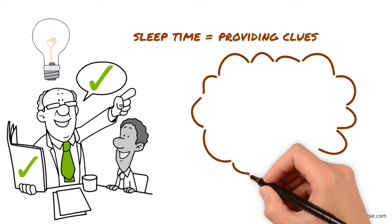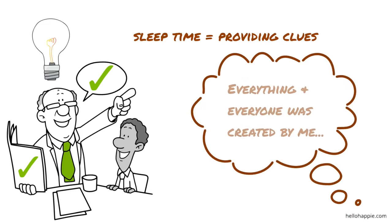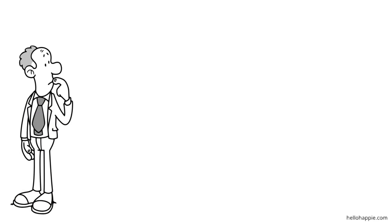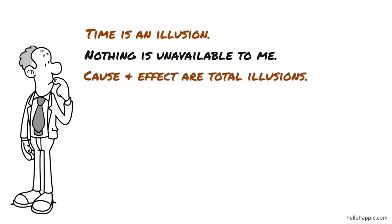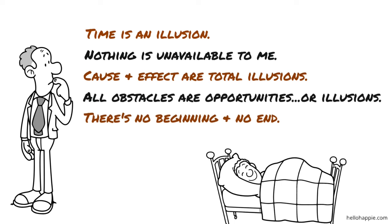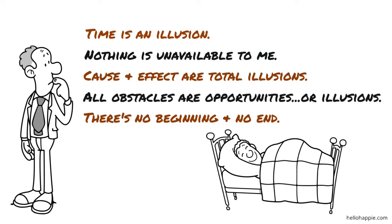I further look back at my dream state from a place of wakefulness and I see that everything and everyone that was in my dream was created by me with my imagination. I keep this in mind as I gaze at who and what I have created in my awake dream. I look back from my wakeful perspective and realize that I lived in a world where time is an illusion, where nothing is unavailable to me, where cause and effect are total illusions, where all obstacles are turned into either opportunities or revealed as illusions, where there is no beginning and no end, and where my body experiences feelings even though the thoughts that resulted in those feelings are all illusions and were totally devoid of judgments by my dreaming self.